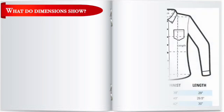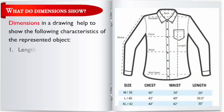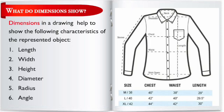What do dimensions in a drawing show? Dimensions in a drawing help to show the following characteristics of the represented object: 1. Length. 2. Width. 3. Height. 4. Diameter. 5. Radius. 6. Angle.